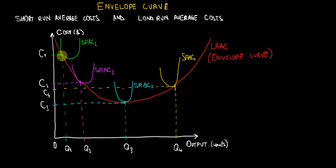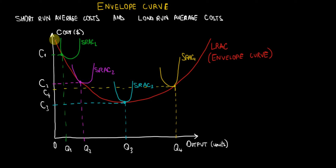Now how does it actually work? In the beginning, the level of Q1 is achieved at a fairly high level of average cost C1. The average cost of production in the beginning is going to be C1. As you can notice, this is a point tangential on the long run average cost.